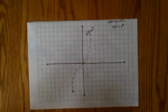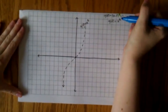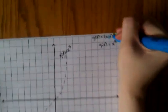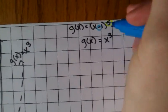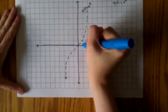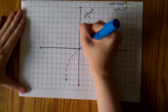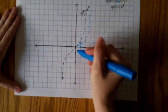After that, we look at what is inside the parenthesis. Whatever is inside the parenthesis, we move left or right. So since it's -1, we move the graph to the right 1. We start at the origin and move right 1, and now it's at (1, 0). We redraw the graph.